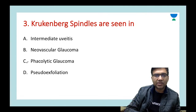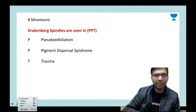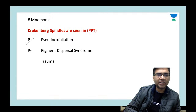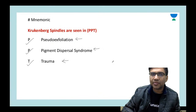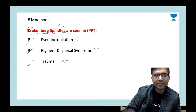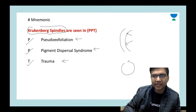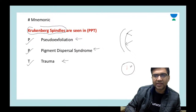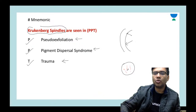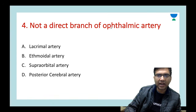Next question: Krukenberg spindles are seen in which of the following? Remember Krukenberg spindles are seen in pseudoexfoliation glaucoma. You can remember the mnemonic PPT: pseudoexfoliation, pigment dispersal, and trauma. Krukenberg spindles is pigment dispersal on the endothelium — you see pigment dispersal in the form of vertical lines on the endothelium.